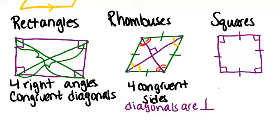So it will have all of these properties: four right angles, congruent diagonals, four congruent sides, diagonals are perpendicular, and the diagonals bisect the angles. All of those things will apply to the square. Because it's a combination of both a rectangle with the four right angles and a rhombus with the four congruent sides.